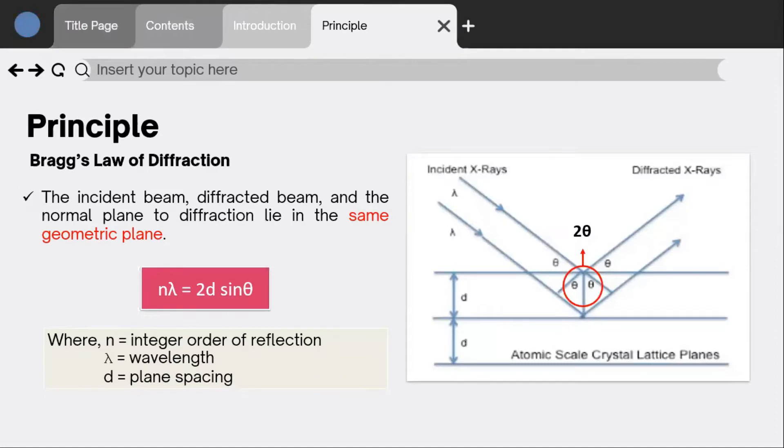Bragg's law of diffraction. The measurement principle of neutron diffraction is based on Bragg's equation. Look at this figure. The incident beam, the diffracted beam, and the normal to the diffraction plane need to lie in the same geometric plane.